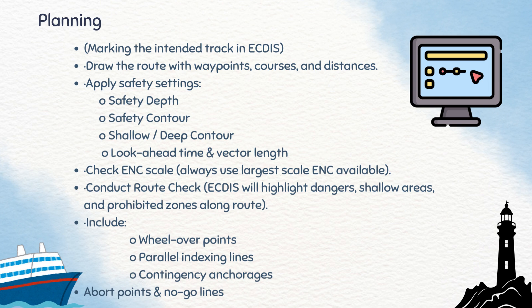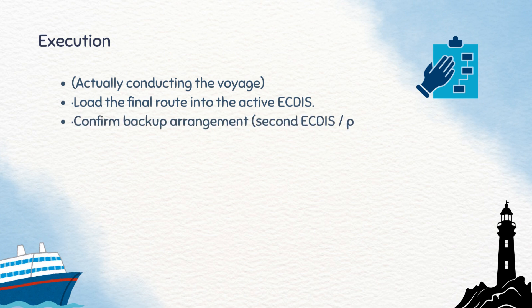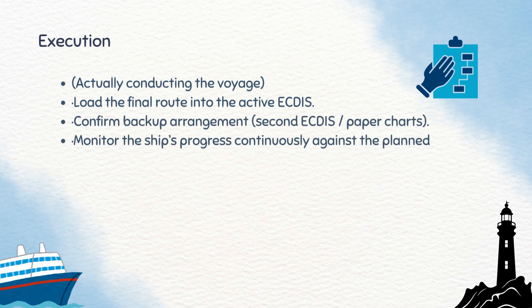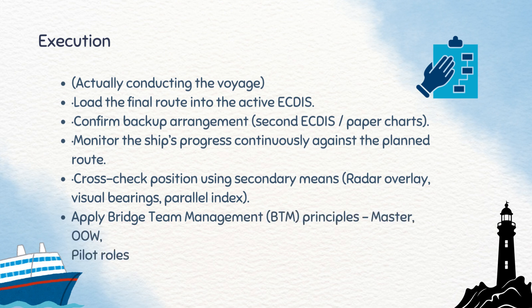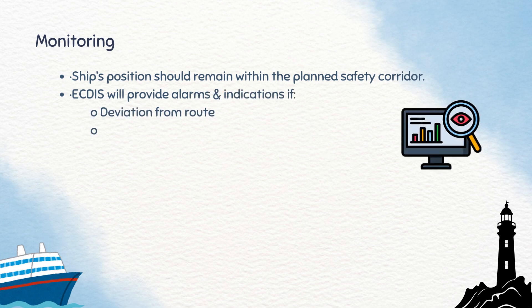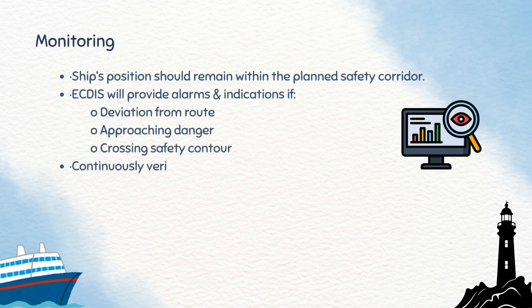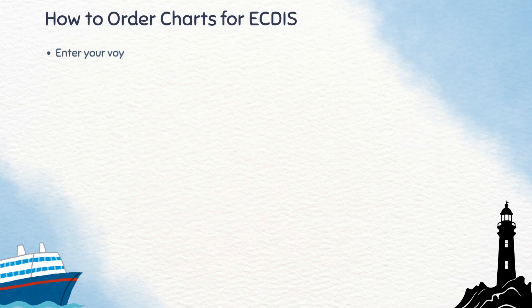ECDIS will highlight dangers. The planning stage also includes Wheelover Points, Parallel Indexing, Contingency Anchorages, and Abort Points. The third stage is Execution: load the final route into the active ECDIS, confirm backup arrangements, and monitor continuously. Cross-check position using radar overlays or visual bearings while applying bridge team management principles. Finally, during Monitoring, the ship must remain within the safety corridor. ECDIS will generate alarms for deviations or approaching dangers, but it is always the navigator's duty to verify ENC accuracy, check sensor inputs, and keep a proper log.